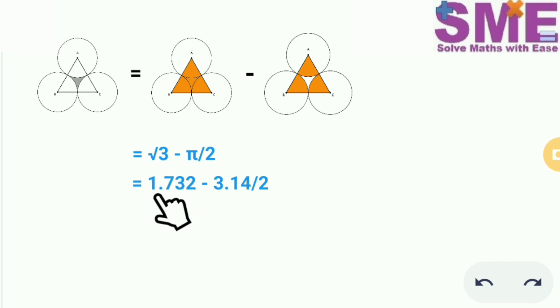The value of √3 is 1.732 and we have taken the value of π as 3.14. So solving we get 1.732 minus 1.570. So the area of this shaded region comes out as 0.162 cm².